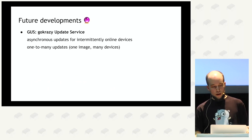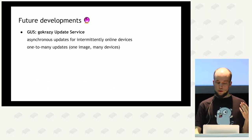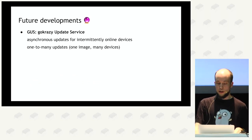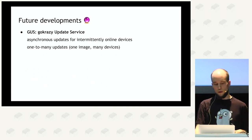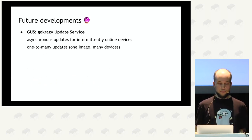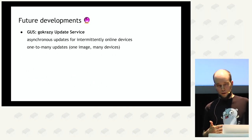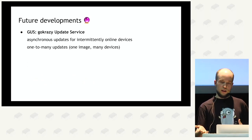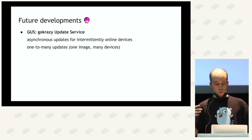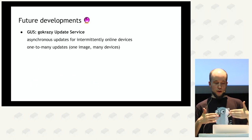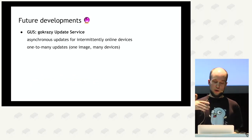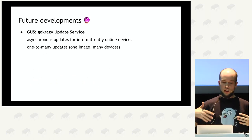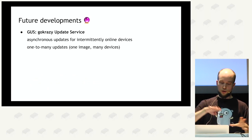For future developments: one project a contributor and I are working on is called GUS — the gokrazy Update Service. The current synchronous update flow requires running 'gok update' directly. GUS enables one-to-many updates: you build an image once, upload it to GUS, and all the different Raspberry Pis running that image can pull the update at their convenience — decoupling image creation from deployment.